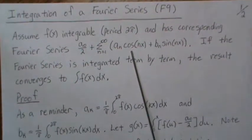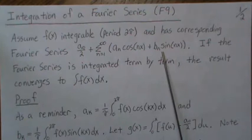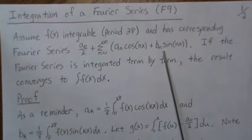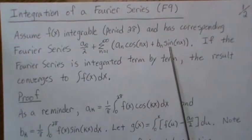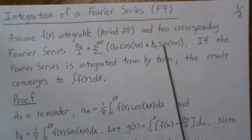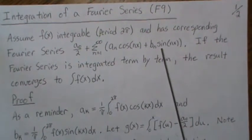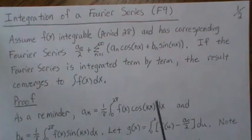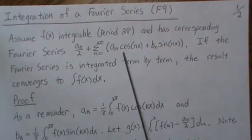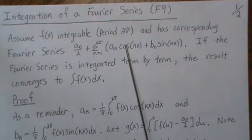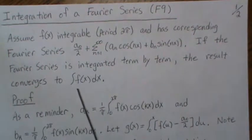and this is minus bₙ, because the integral of sine goes to minus sine of nx over n. Anyway, so that's what we want to show, that that term by term converges to this.